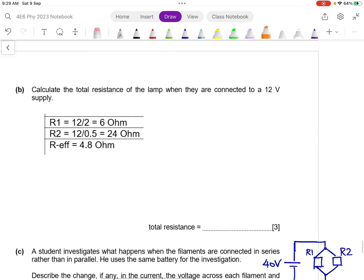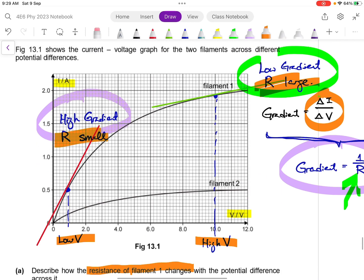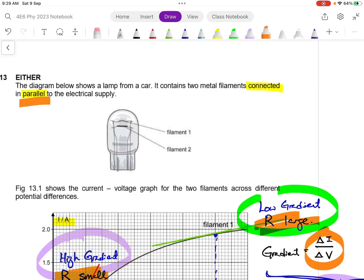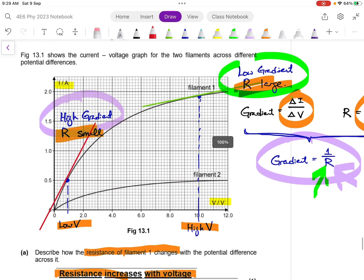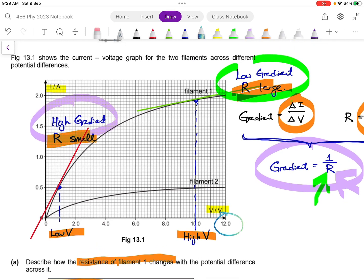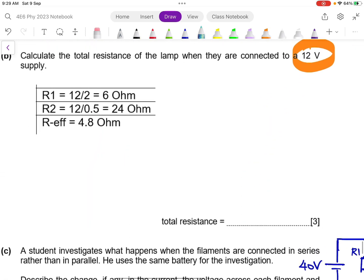Then for part B, it is just a very easy 3 marks. I'm basically telling you that the voltage supply is 12 volt. And because this guy is connected in parallel, it means that both filaments are going to receive 12 volt. So once you have this data, you can go to the graph at 12 volt. And you can actually find out what is the current that is flowing through when the PD is 12 volt.